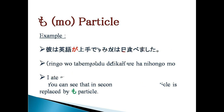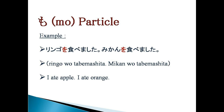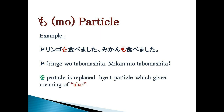There is one more example. RINGO O TABEMASHTA. MEKAAN O TABEMASHTA — meaning 'I ate apple. I ate orange.' Now let's use the MO particle: RINGO O TABEMASHTA. MEKAAN MO TABEMASHTA — meaning 'I ate apple. I also ate orange.' You can see here, the O particle is replaced by MO particle in the second sentence, and it has become 'also.'